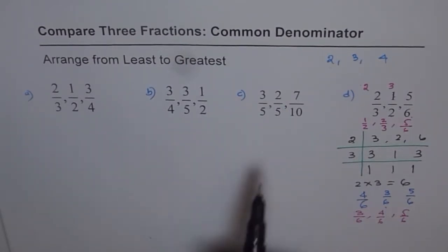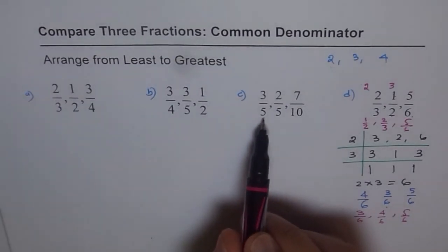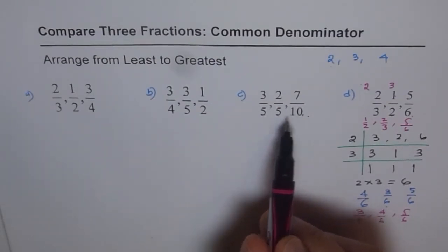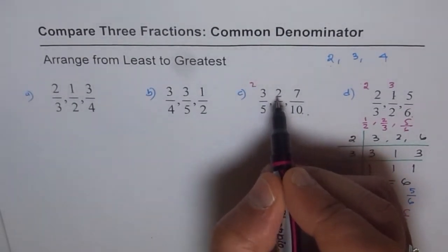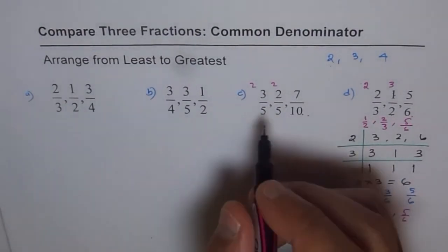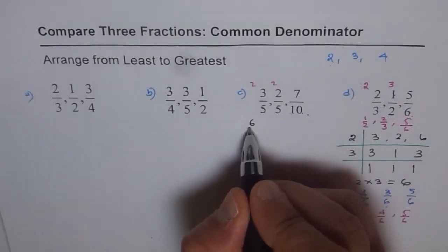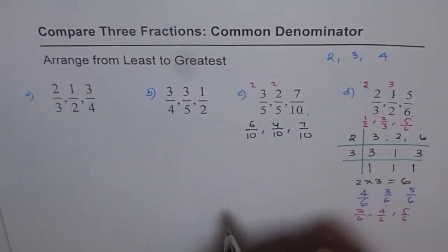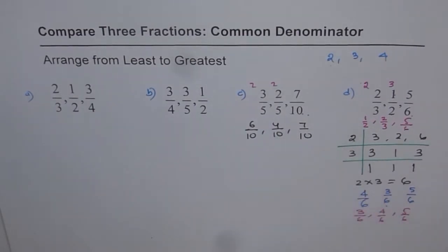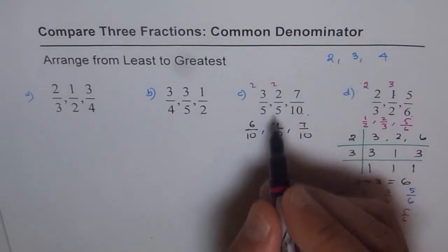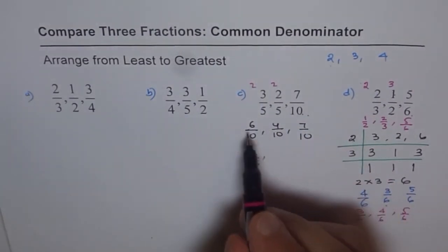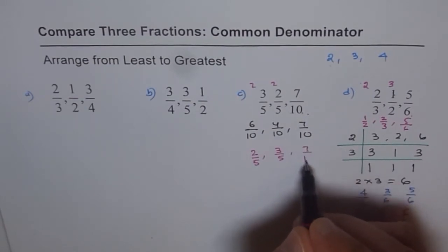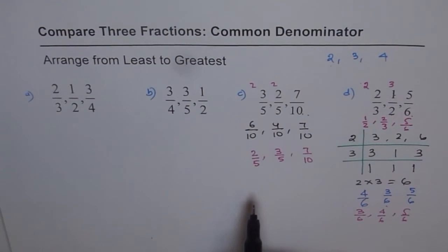Now we will apply a shorter method for Set B. The least common multiple of 5 and 10 is 10. To make 5 into 10, multiply by 2. So we multiply both numerator and denominator of the fraction with denominator 5 by 2. Our fractions become 6 over 10, 4 over 10, and 7 over 10. The center number, 4 over 10, is the least. So the answer from least to greatest is: 2 over 5, then 3 over 5, then 7 over 10.